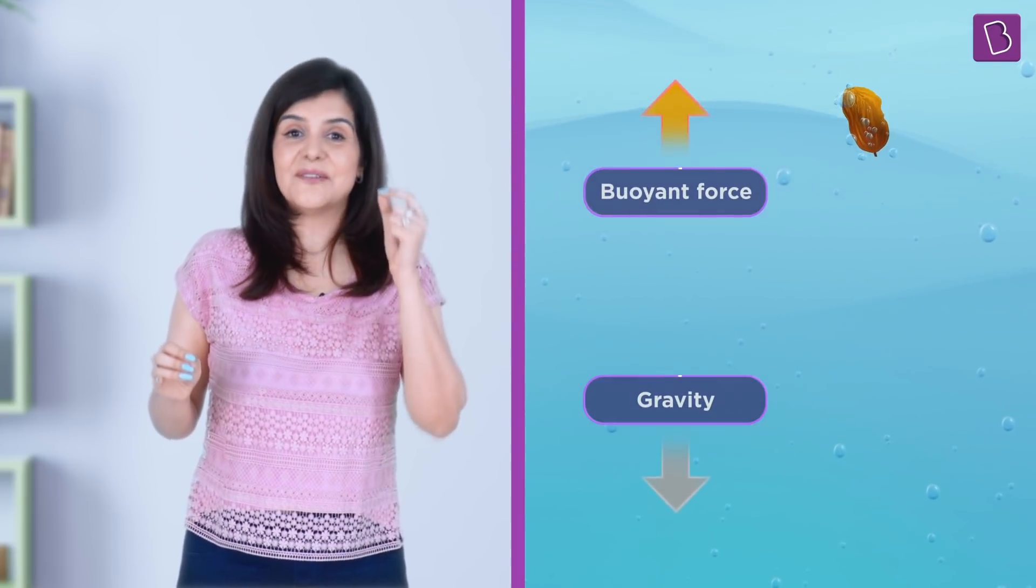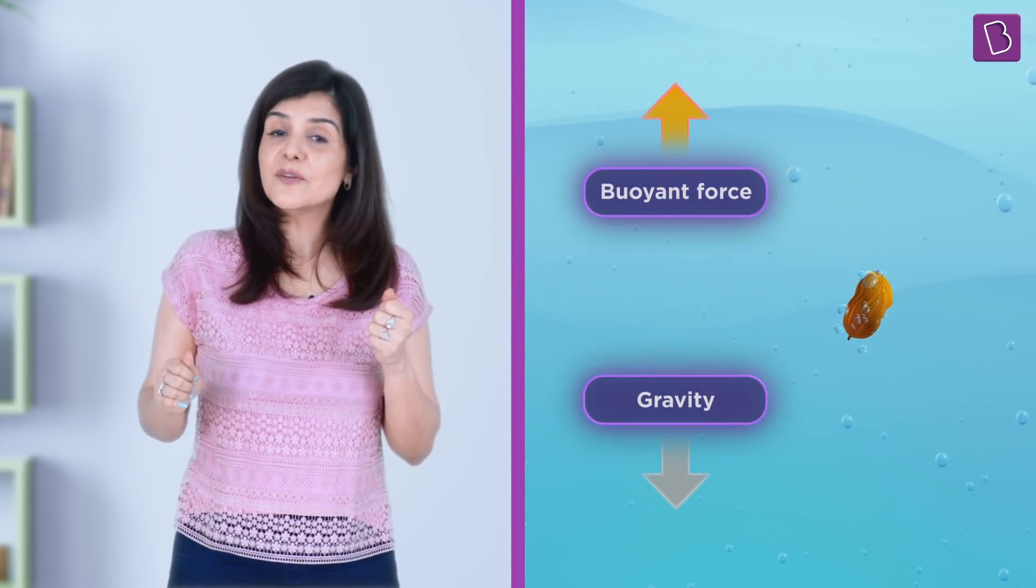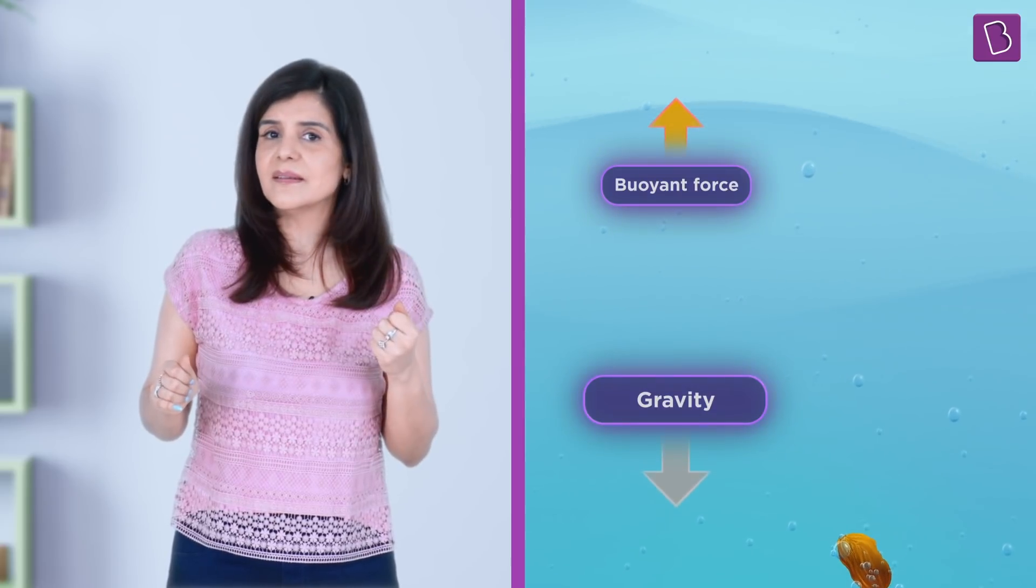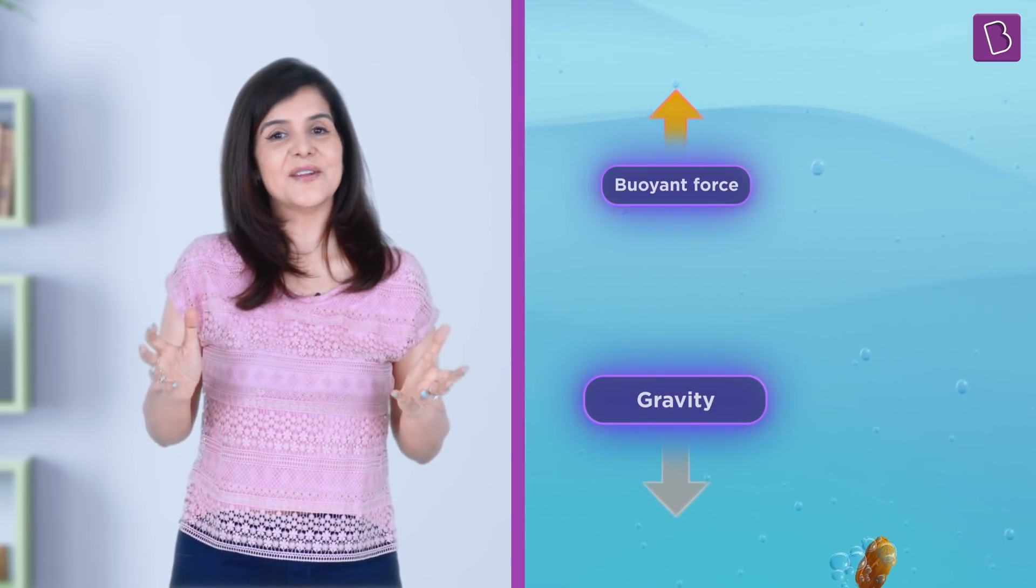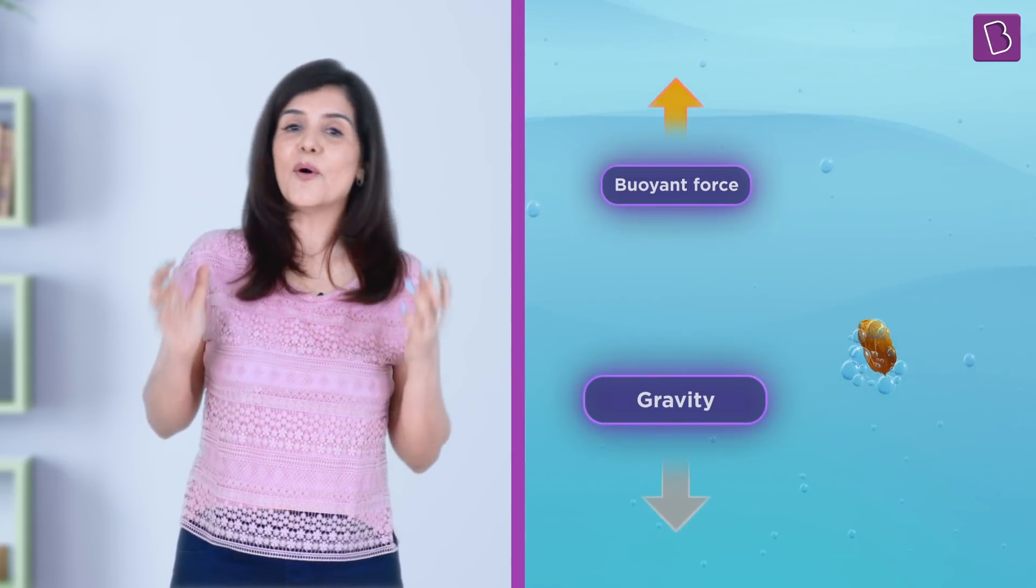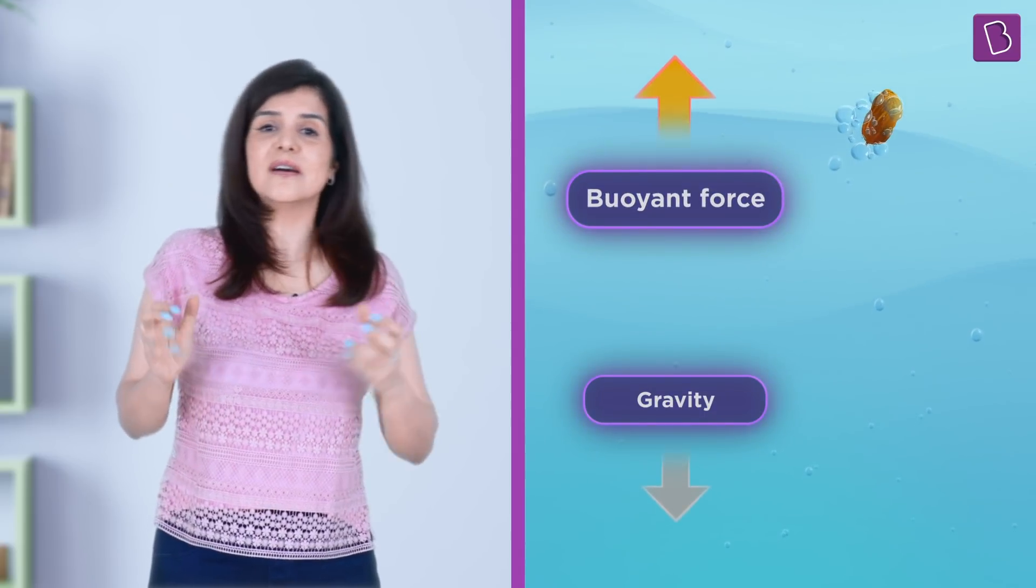This means that when the raisin falls, the buoyant force must be weaker than gravity. Similarly, when the raisin rises, the buoyant force must be stronger than gravity. So what decides how much buoyant force would act on this raisin?